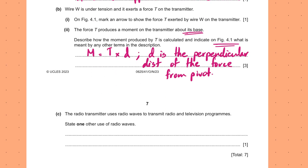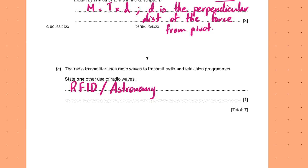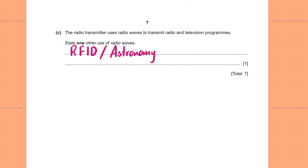The radio transmitter uses radio waves to transmit radio and television programmes. State one other use of radio waves. There are many uses: RFID, astronomy, Bluetooth, Wi-Fi. So smooth sailing so far — let's go on.